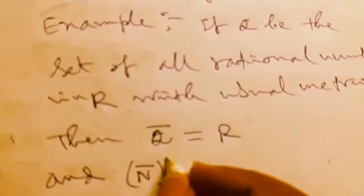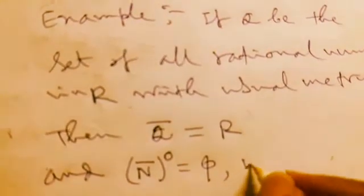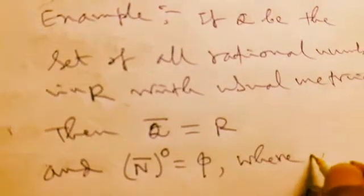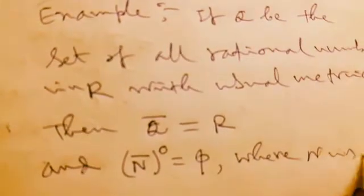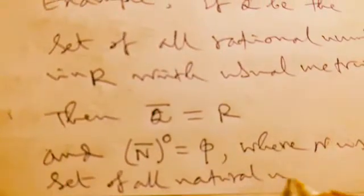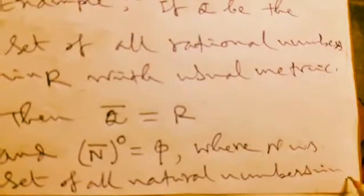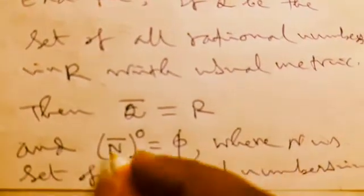if we consider N bar degree is equal to phi. Nowhere dense, where N is the set of all natural numbers in R. That is why it is empty and called nowhere dense.